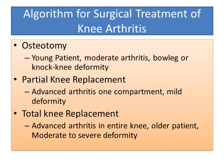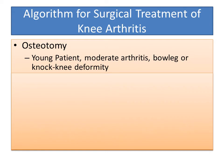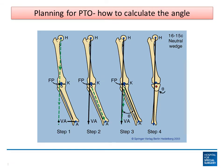This is my algorithm for the surgical treatment of knee arthritis. Osteotomy is indicated for the young patient with moderate arthritis and a bow leg or knock knee deformity. We use this type of planning to determine the location and magnitude of the osteotomy, or bone cut, for the deformity correction.